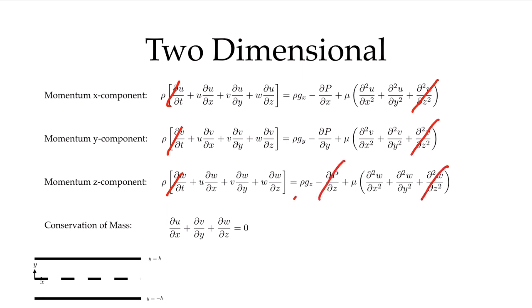Two-dimensionality eliminates all derivatives with respect to z, all w velocity terms, and removes the body force in the z direction. We see that the two-dimensional assumption gets rid of the entire z-momentum equation entirely. So we're already down to significantly fewer terms, including eliminating the w term in the conservation of mass equation.